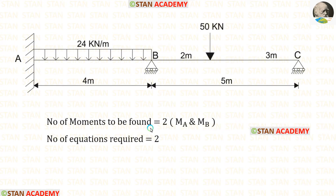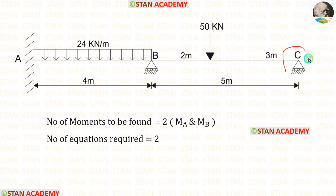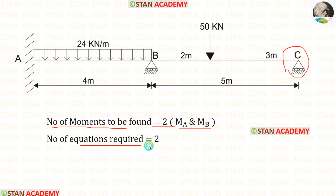In this beam, we have to find two moments: MA at point A and MB at point B. At point C, there will be no moment because it is a simply supported end. So the number of moments to be found is 2. To find these two moments, we need two equations. Using two spans, we can make one equation.